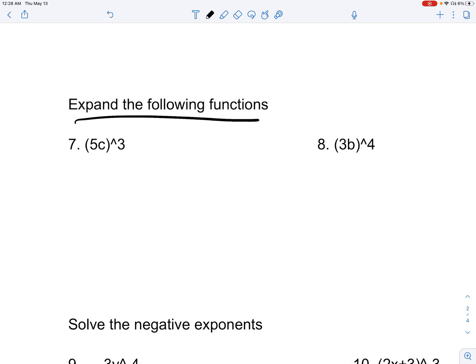Expand the following functions. 5c cubed, which is 5 cubed times c cubed. 5 cubed is 125. c cubed would just be c cubed. So 125c cubed.